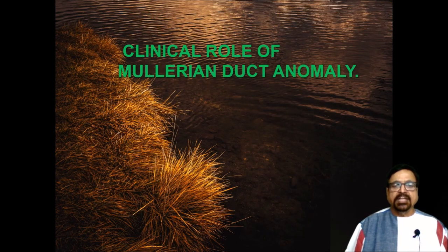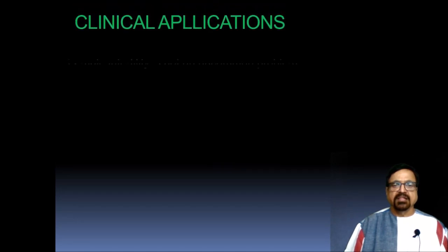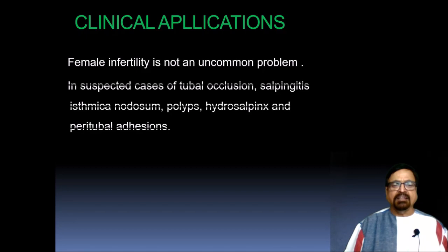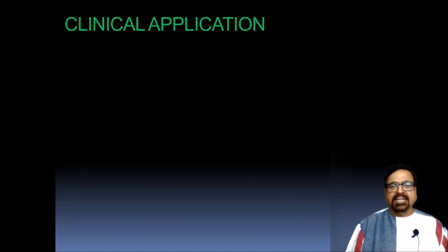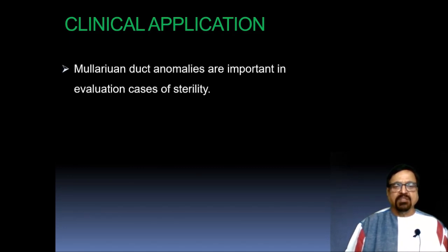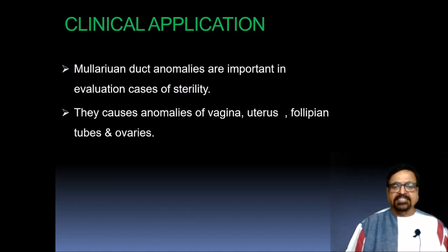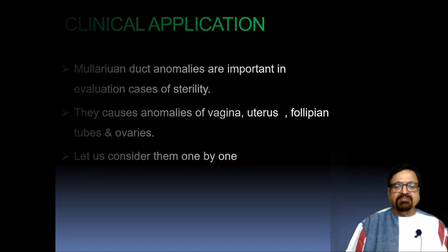The clinical role of Mullerian duct anomalies: clinical applications are in female infertility. Suspected cases of tubal occlusion, salpingitis isthmica nodosa, polyps, hydrosalpinx, and peritubal adhesions are some of the indications, among multiple others. Mullerian duct anomalies are important in the evaluation of sterility cases; they cause anomalies of the vagina, uterus, fallopian tubes, and ovaries.